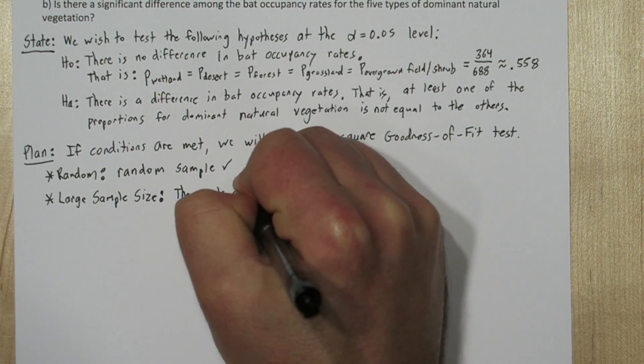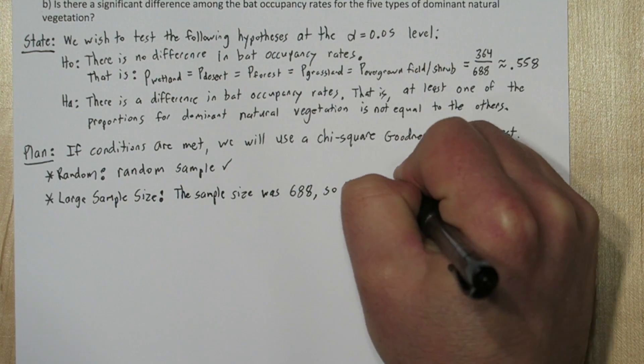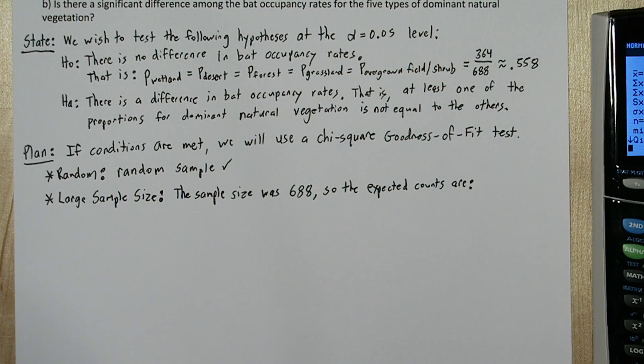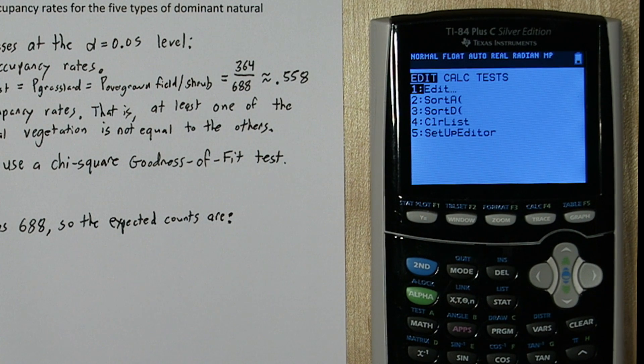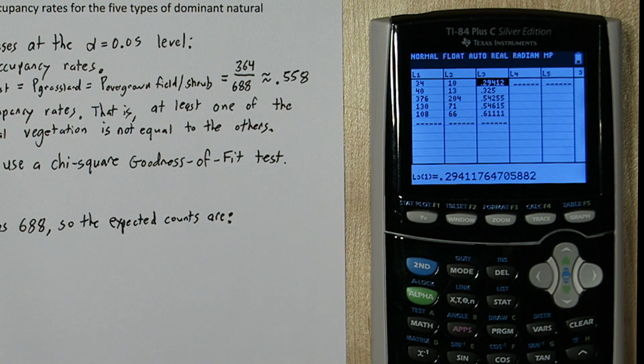So our sample size was 688. We need to calculate our expected cell counts. If we go back to the calculator and press the STAT button again, and then press enter, we're back to our list. If the null hypothesis is true, we'd expect the occupancy rates to all be the same, approximately 0.558. So let's figure out how many houses we'd expect to be occupied for each of the dominant natural vegetations.